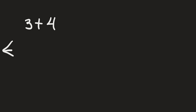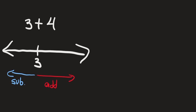First we're going to solve 3 plus 4. The easiest way to think about this is by using a number line. If we start off at 3, whenever we're adding a number to 3 we have to go to the right, and whenever we're subtracting a number we're going to move to the left. So since we're adding 4 to 3, we're going to go 4 units to the right — 4, 5, 6, 7. So we get that 3 plus 4 is equal to 7.